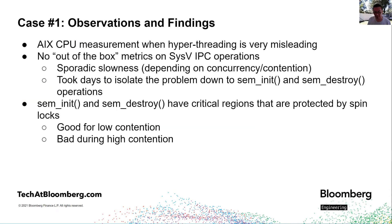What did we learn here? First, don't trust AIX CPU measurements when running in hyperthreaded mode. Also importantly, there are no out-of-the-box metrics on System V IPC operations — it took us days to isolate the problem down to sem_init and sem_destroy system calls. Our AIX kernel performance team ran the AIX equivalent of Solaris lockstat to confirm a coarse-grained spin lock that protects sem_init and sem_destroy, with the two calls protected by different spin locks. Spin locks are good when contention is low, but on our busy systems when contention is high, spin locks are not so good.